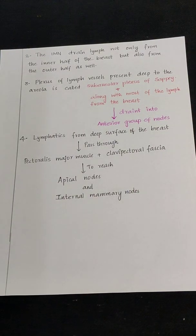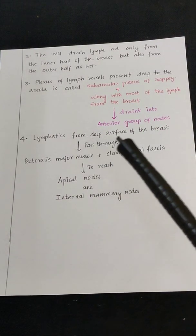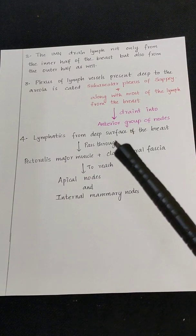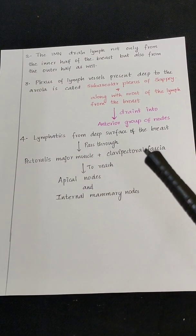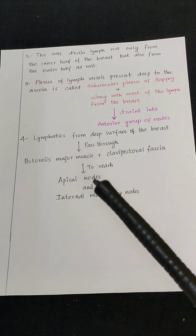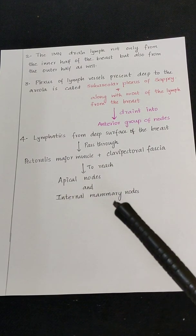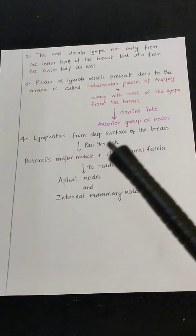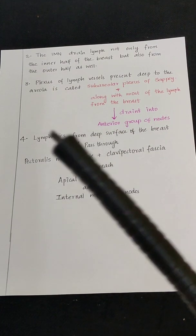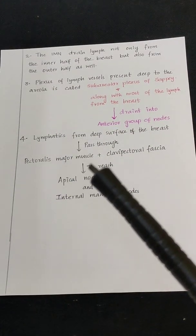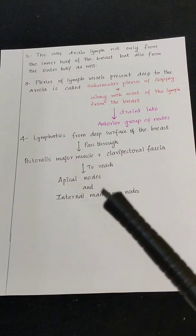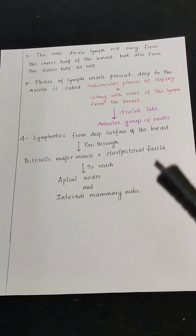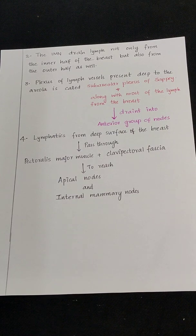Lymphatics from the deep surface of the breast pass through the pectoralis major muscle and the clavipectoral fascia to reach the apical nodes and internal mammary nodes.